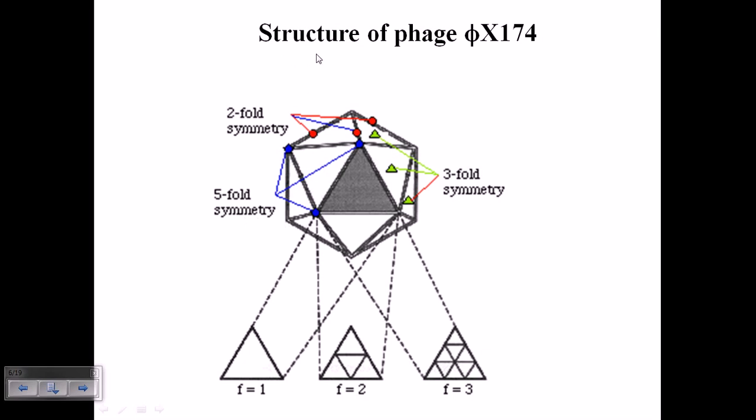Now let's look at the structure of this phage. The first structure is an icosahedron, and it is not having any kind of tail. We have already talked about T7 phage and M13 phage, which is completely different.